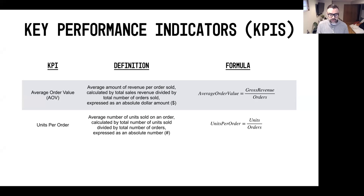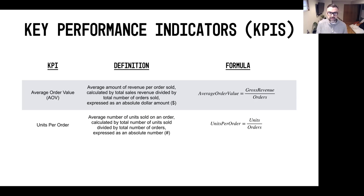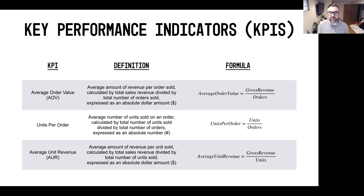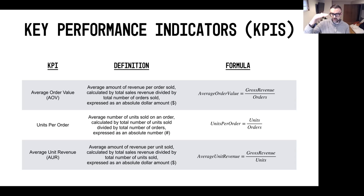Next, we've got units per order. Units per order is calculated by taking the number of units divided by the number of orders — that yields your units per order. It's a healthy benchmark we'll get into in two days' time. Then you've got your average unit revenue: think of this as how much you're making on each individual unit of sale. It's calculated by taking your gross sales revenue divided by the number of units to get your average unit revenue.